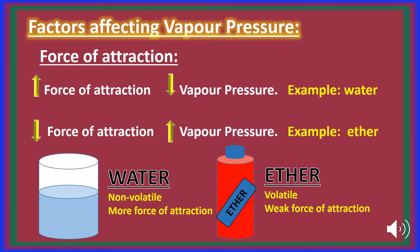Why is water non-volatile and ether volatile in nature? Because water has strong hydrogen bonding, whereas ether has weak London forces. So the intermolecular forces in water are stronger, and therefore its vapor pressure is lower than that of ether.